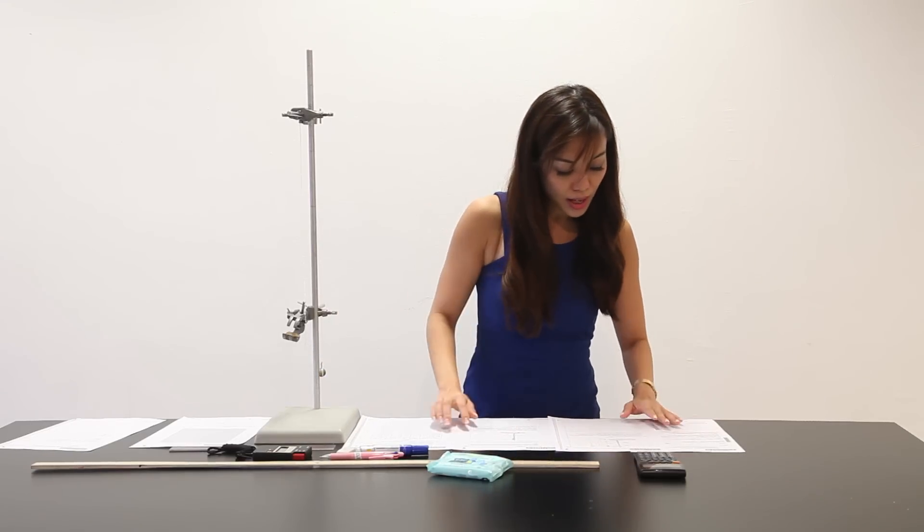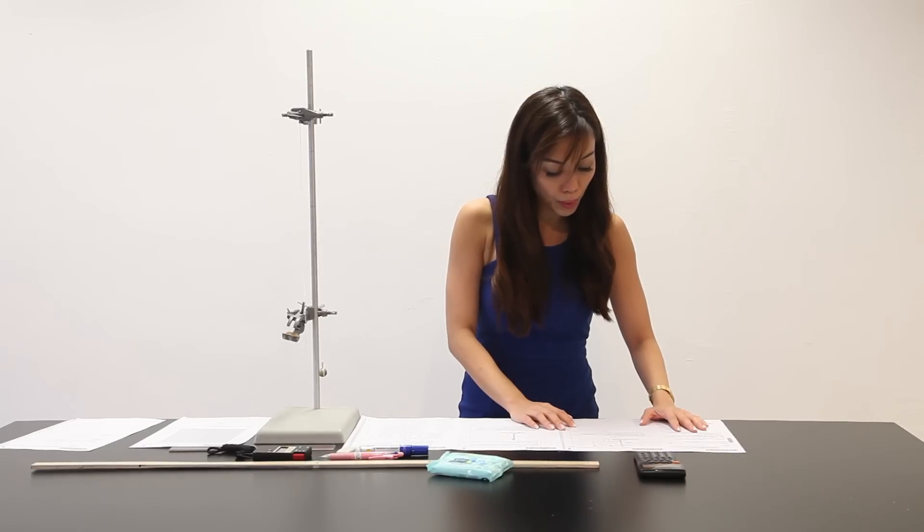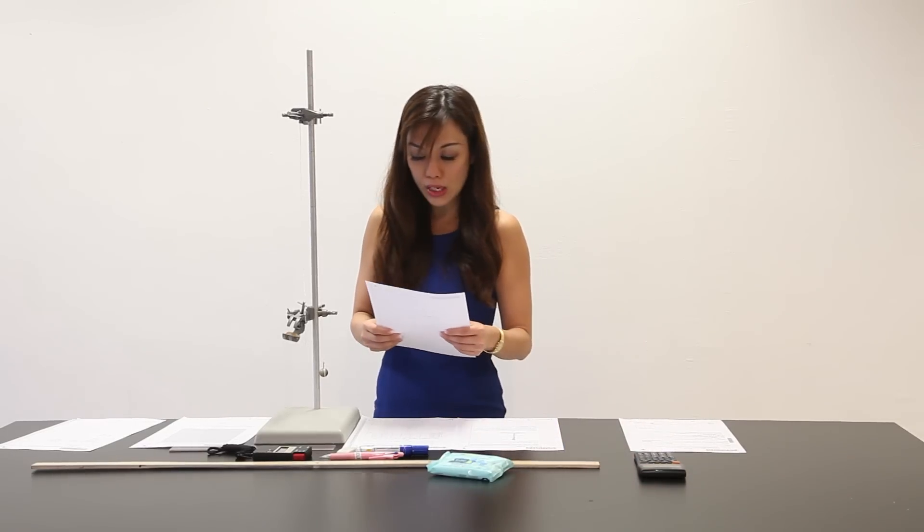And X is this portion from the bottom clamp all the way to the box. So now, let's read the questions. Part A says, set up the apparatus as shown in figure 1.1. Adjust length L so that it's between 49 and 50 cm.